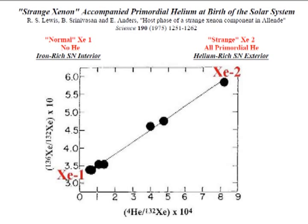In addition to this meteorite data, normal XE1 was observed in samples of Mars, another iron-rich planet like Earth, and strange XE2 was observed with primordial helium in the carbon-rich gaseous planet Jupiter.